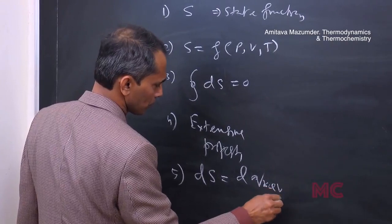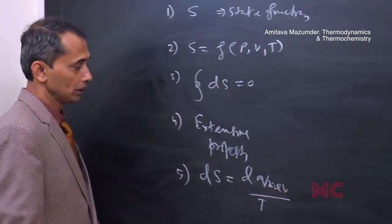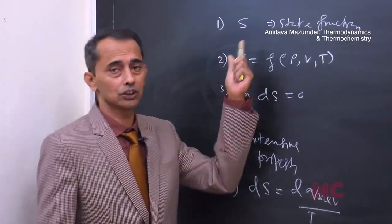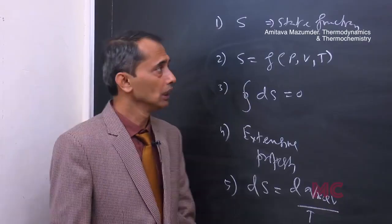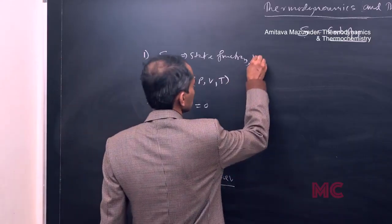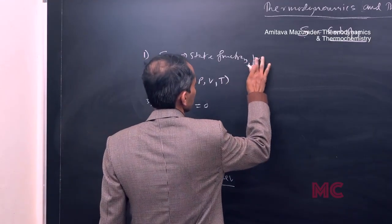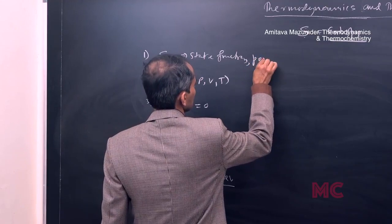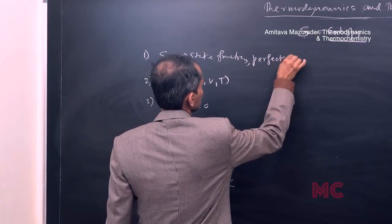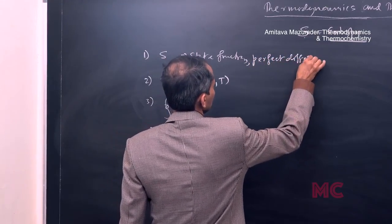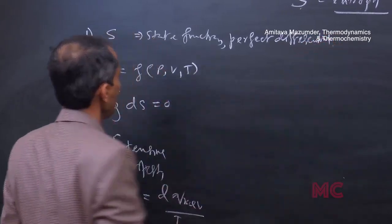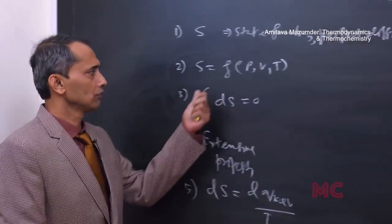The definition of entropy is: dS is equal to dQ reversible divided by T. S is a state function and also a perfect differential.